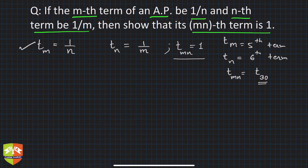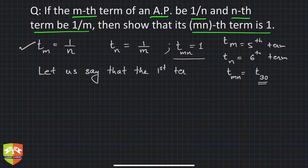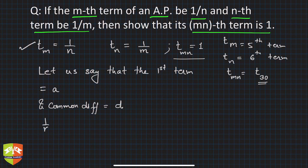So let us say that the first term is equal to a and common difference is equal to d. Then t_m will be 1/n, which is given. This can be equated to first term plus (m-1)d. This is equation number 1.